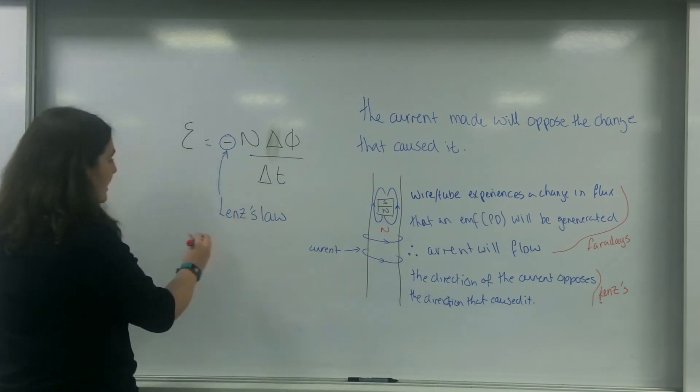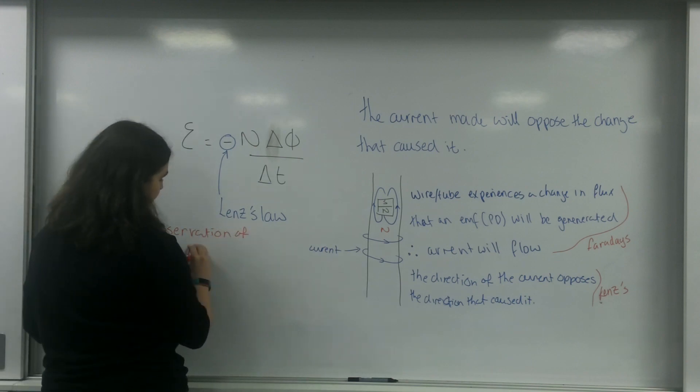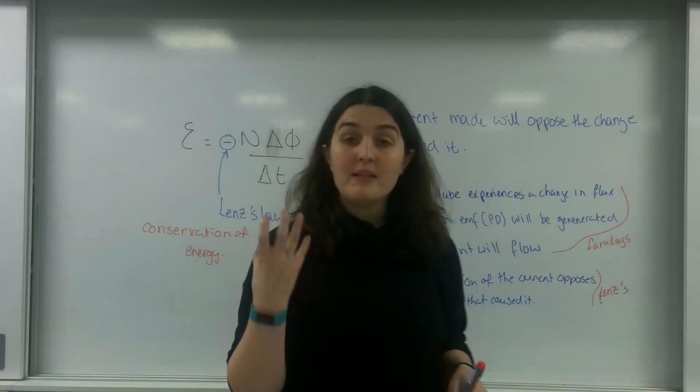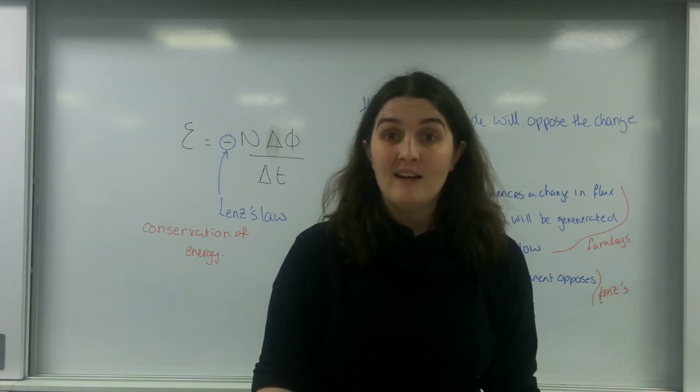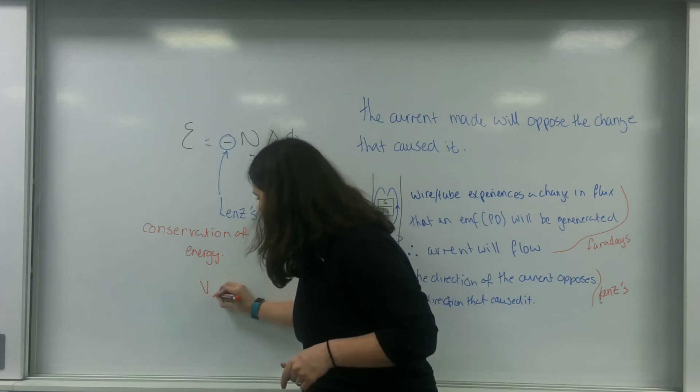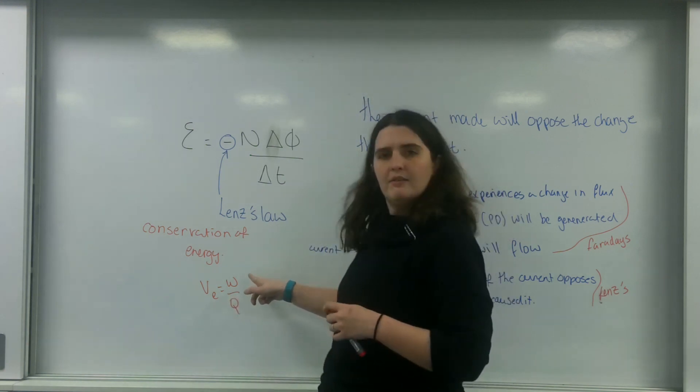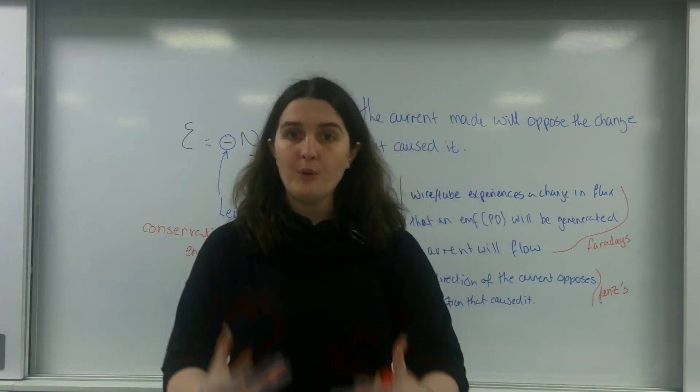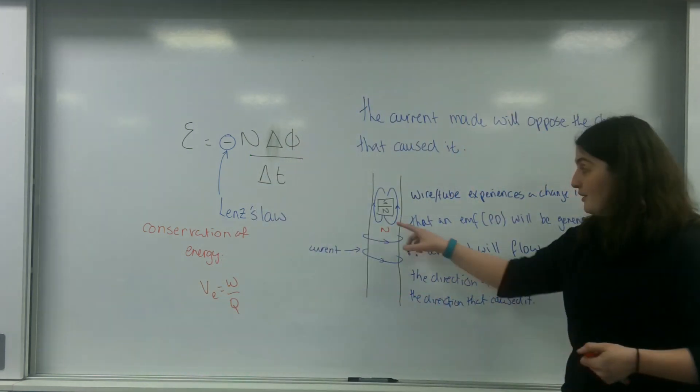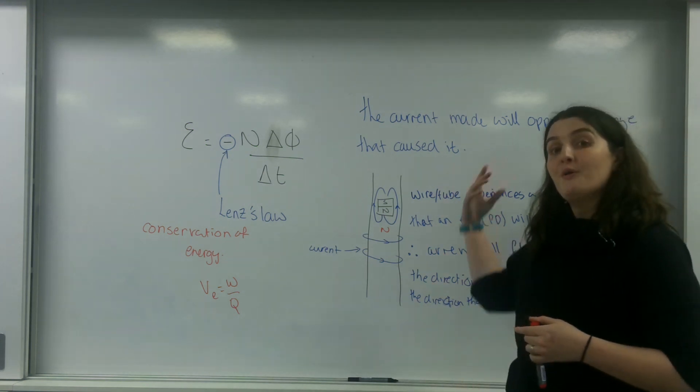So Lenz's law here is about the conservation of energy. For an EMF, an electric field to appear, a potential difference to appear - and just to remind you what potential is, potential is energy, this is electric potential per unit charge - for that to appear out of nowhere, it has to take energy from somewhere. And it does so via creating a magnetic field which will oppose the field that did that.